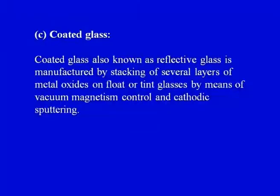Coated glass, also known as reflective glass, is manufactured by stacking several layers of metal oxide on float or tint glasses by means of vacuum magnetron sputtering or cathodic sputtering. The focus here is on the application aspect: multiple layers of metal oxides are stacked on tinted or float glasses to create coated glass.